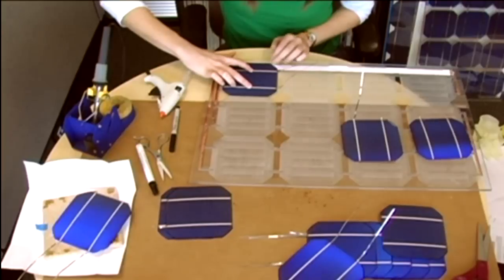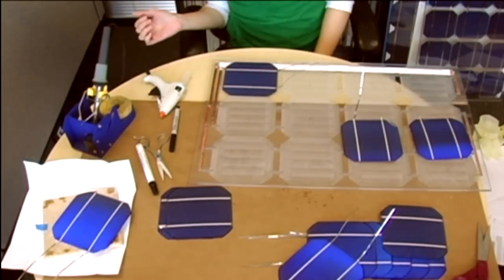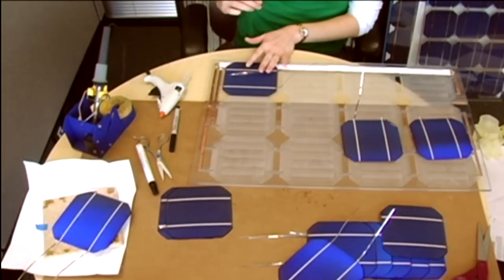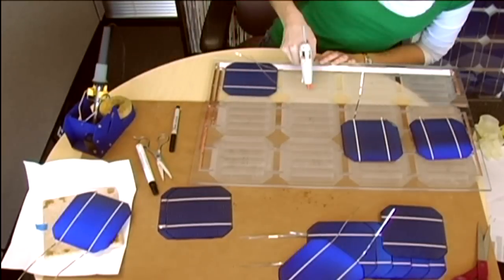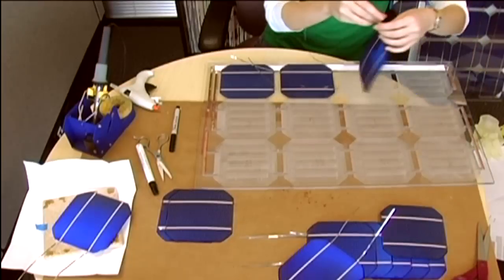Continue pressing gently on the cell for about 20 seconds to let the glue cure. Then you can gently bend the tabbing wire so you don't accidentally pin it under the next cell. Continue this process for the next three cells as noted in the documentation.